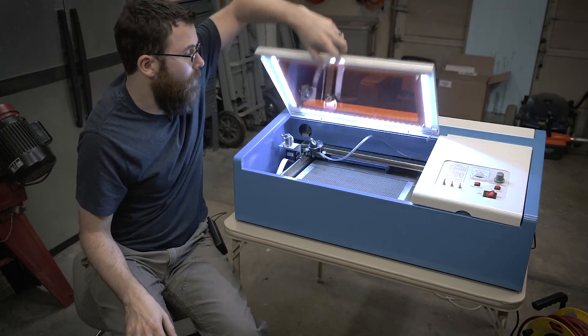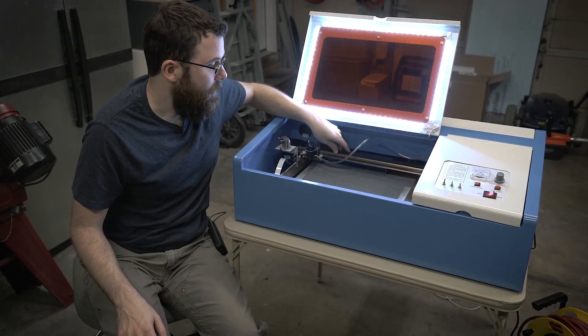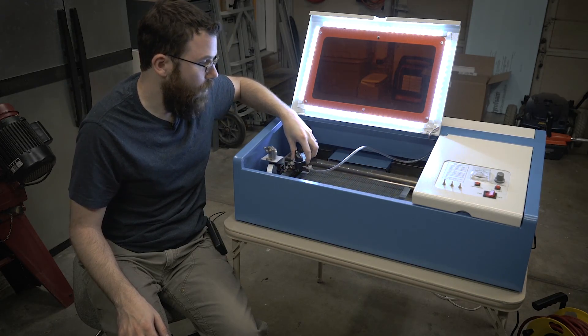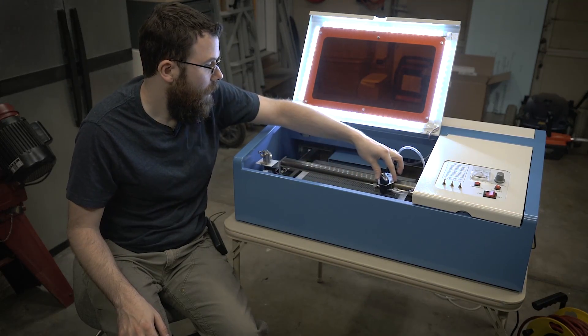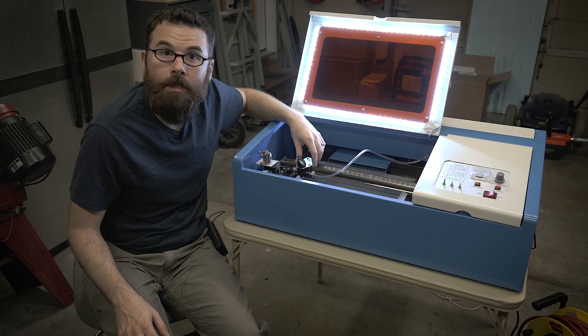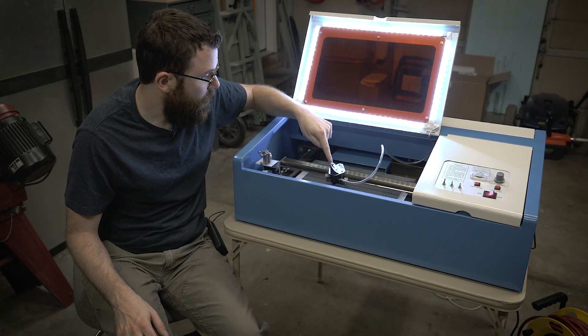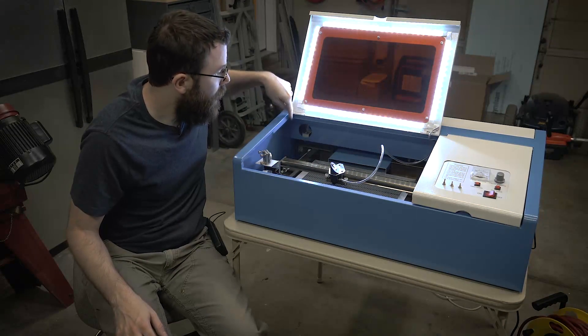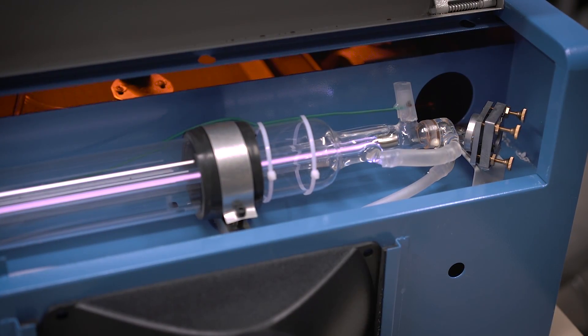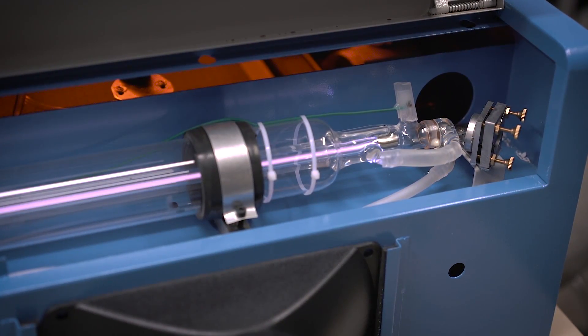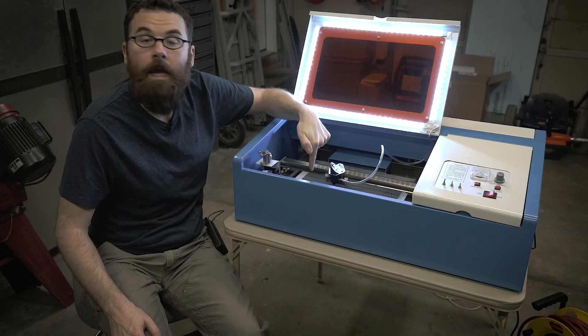If we lift this up, you can see that it has this gantry, so this would be your Y axis, and then this would be your X axis. It uses a series of mirrors positioned here, here, and here to move the laser from the CO2 laser that's in the back of the machine into the cutting head and straight down.